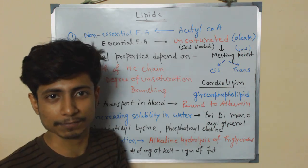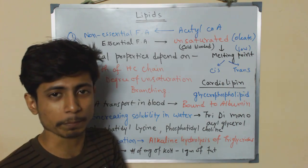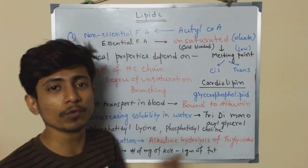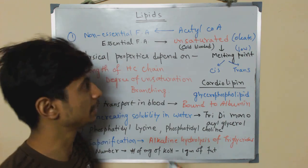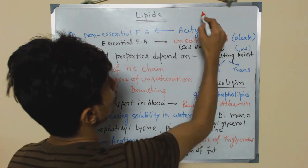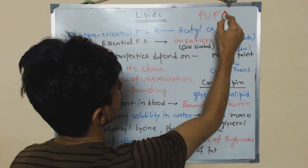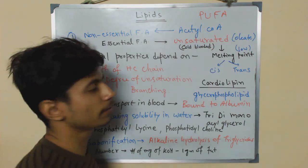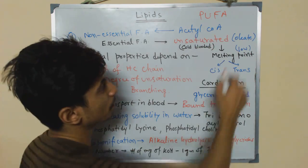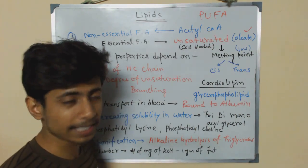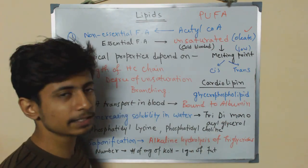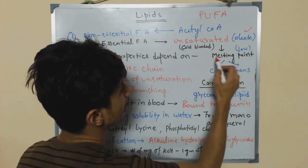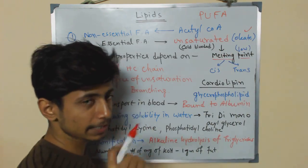Polyunsaturated fatty acids (PUFAs) are found to be even better for our health. An example of an unsaturated fatty acid is oleate, or oleic acid. These unsaturated fatty acids always have a low melting point, which is a very important feature.